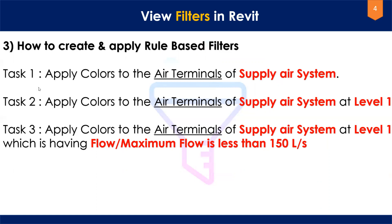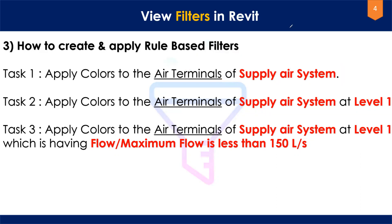I'll explain rule-based filters using a series of tasks where the complexity increases. Task one is to apply colors to the air terminals of the supply system. There are two things to remember in a rule-based filter: one is the category, and the second is the condition. In this task the category is air terminals and the condition is that only supply-system air terminals should be colored. Let's jump into Revit.